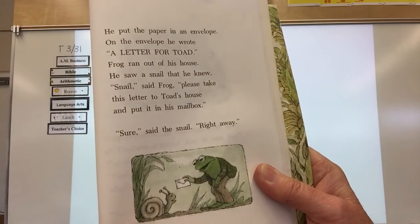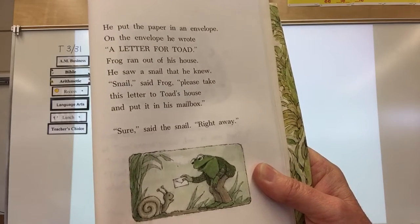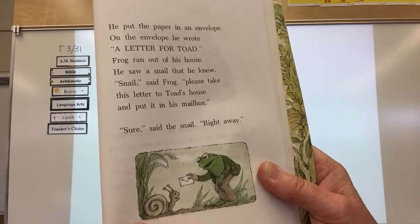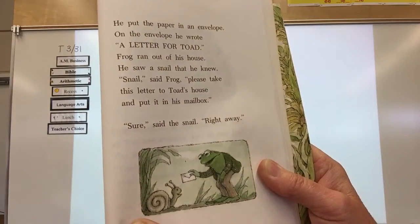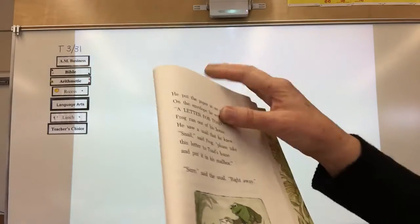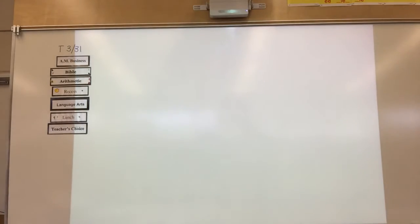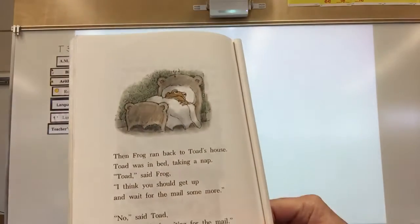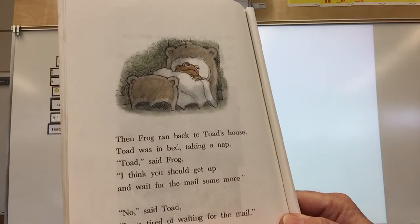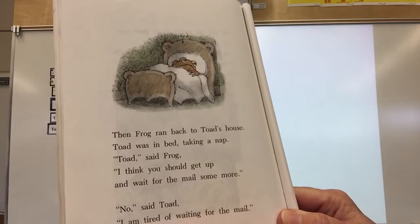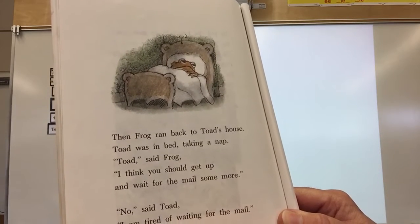He put the paper in an envelope. On the envelope, he wrote a letter for Toad. Frog ran out of his house. He saw a snail that he knew. Snail, said Frog, please take this letter to Toad's house and put it in his mailbox. Sure, said the snail. Right away. Then Frog ran back to Toad's house.